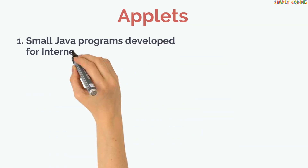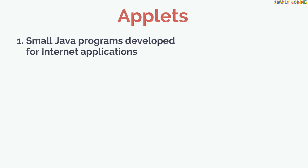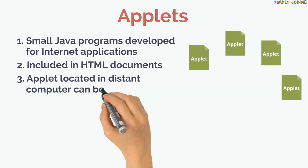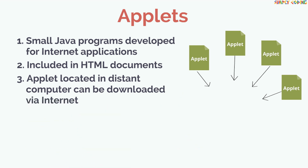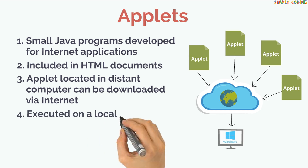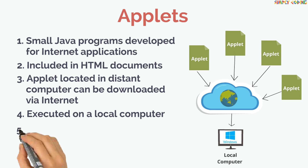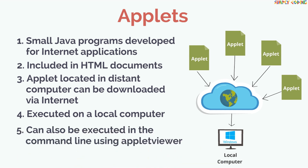Applets are small Java programs developed for Internet applications. They can be included in an HTML document. An applet located on a distant computer can be downloaded via the Internet and executed on a local computer using a Java-capable browser. Java applets can also be executed in the command line using Applet Viewer, which is part of the JDK.